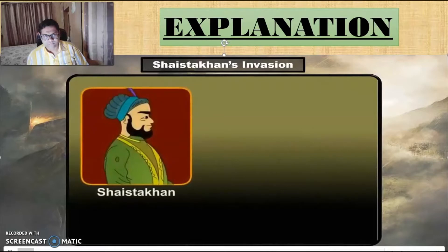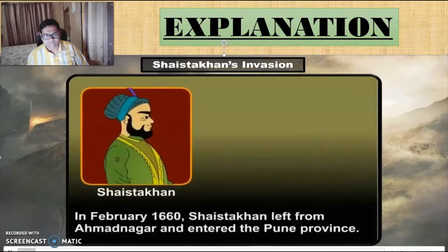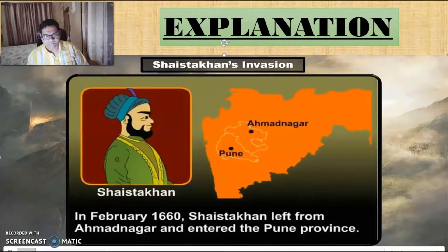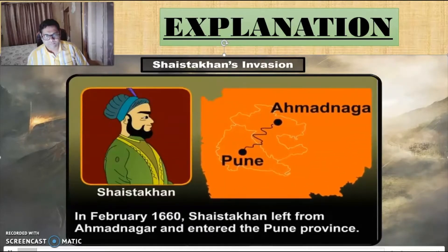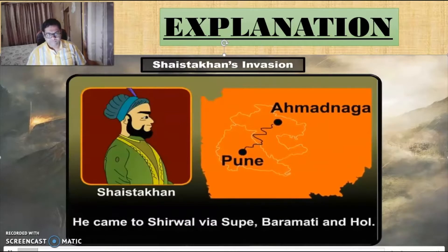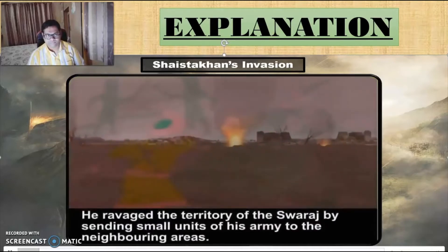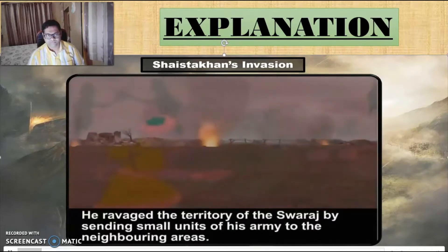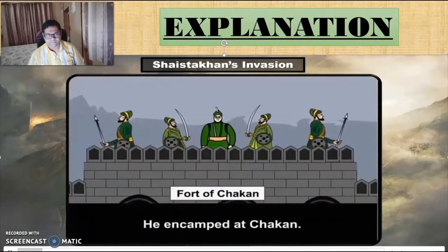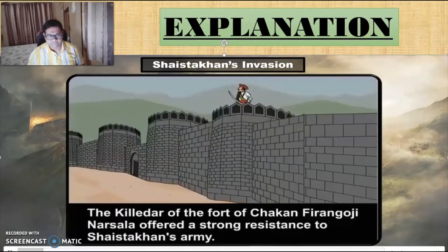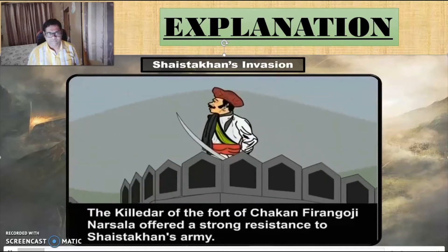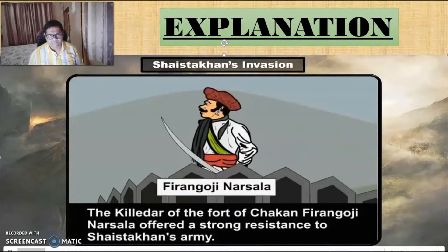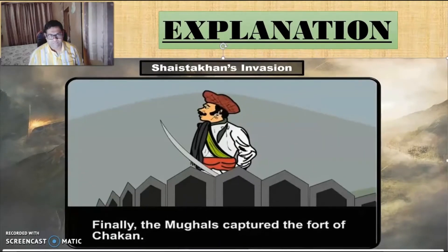Shaishta Khan's Invasion. In February 1660, Shaishta Khan left from Ahmadnagar and entered the Pune province. He came to Shurval via Supeh, Baramati and Hoor. He opened up the territory of the south by sending small units of his army to the neighbouring areas. He encamped at Chakad. The killedar of the fort of Chakad, Firangoji Narsala, offered strong resistance to Shaishta Khan's army, but finally the Mughals captured the fort of Chakad.